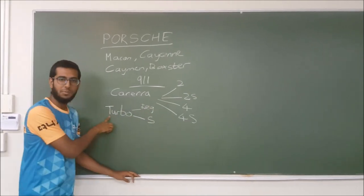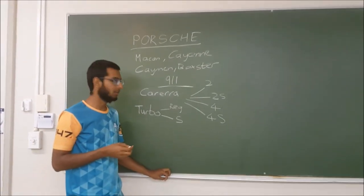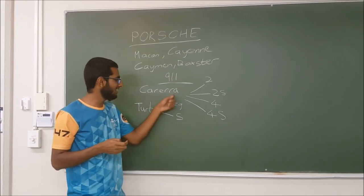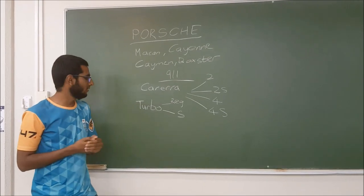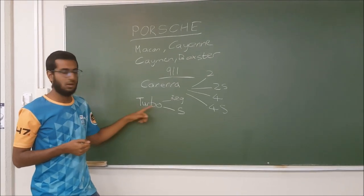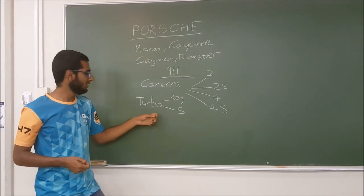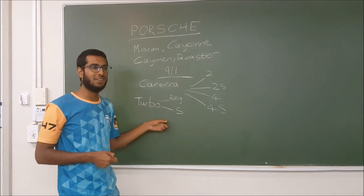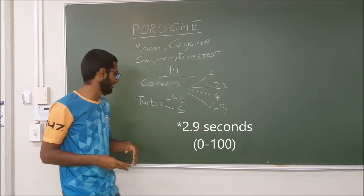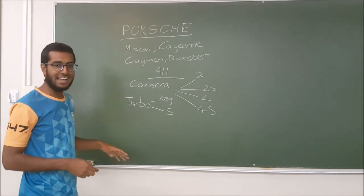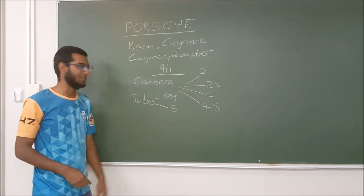These come with a 3.8 litre twin turbo. Yeah so these are 3 litres and these are 3.8 litre twin turbo and they're both 4 wheel drive, really fast. The turbo S goes from 0 to 60 in around 2.5, 2.3 seconds. So they're quite understated cars but they can keep up with supercars.